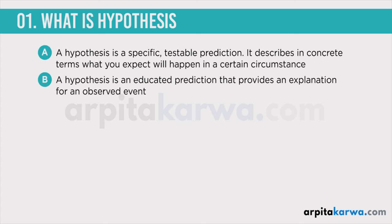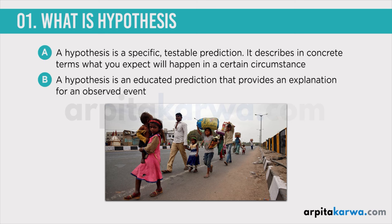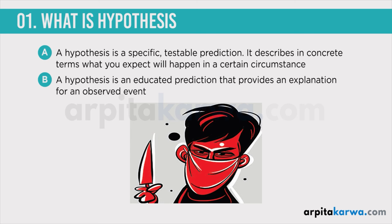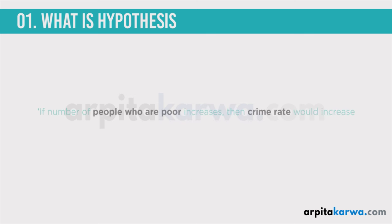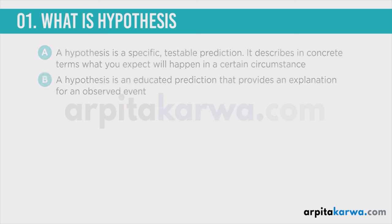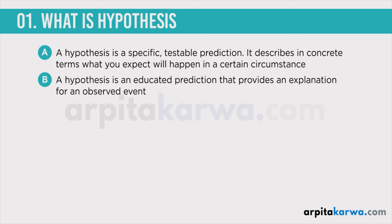For example, in India a lot of people are poor, and as the number of people who are poor increases, the rate of crime also increases. So your hypothesis — your educated prediction — would be: if the number of people who are poor increases, then the crime rate of any society will increase. Similarly, if we increase the amount of light during studies, then students' concentration will increase. This is an educated prediction that provides an explanation for any phenomenon, and this is known as hypothesis.